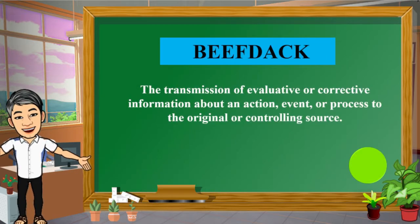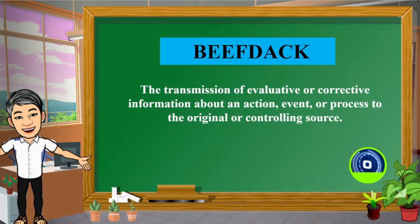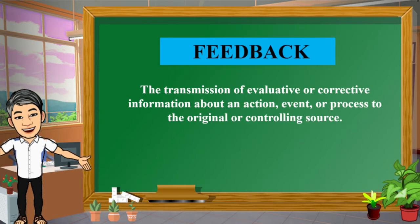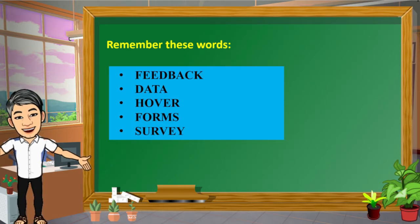The transmission of evaluative or corrective information about an action, event, or process to the original or controlling source. The word is feedback. Remember these words so that it will be easier for you to fully understand our lesson for today.